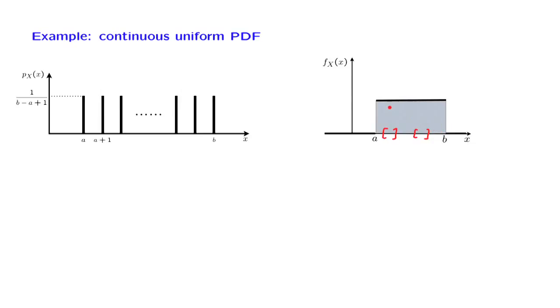By the way, since probabilities must add to 1, the area of this rectangle must be equal to 1, and therefore, the height of this rectangle has to be 1 over B minus A. We have a height of 1 over B minus A and a length of B minus A, so the product of the two, which is the area, is equal to 1.